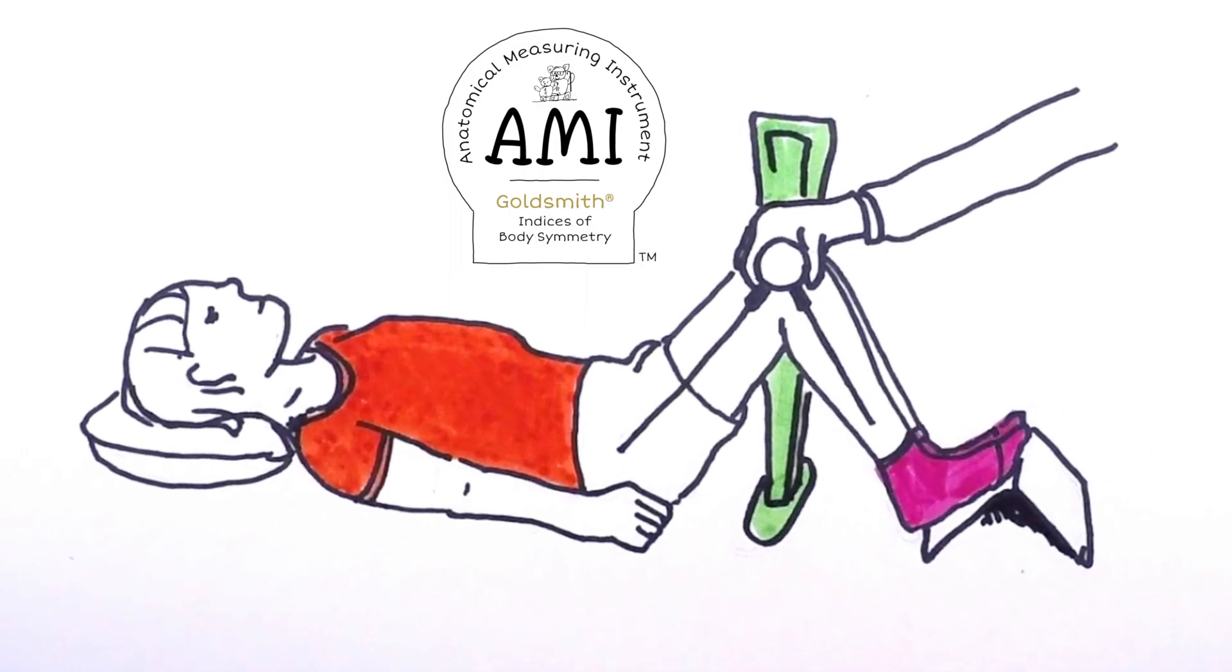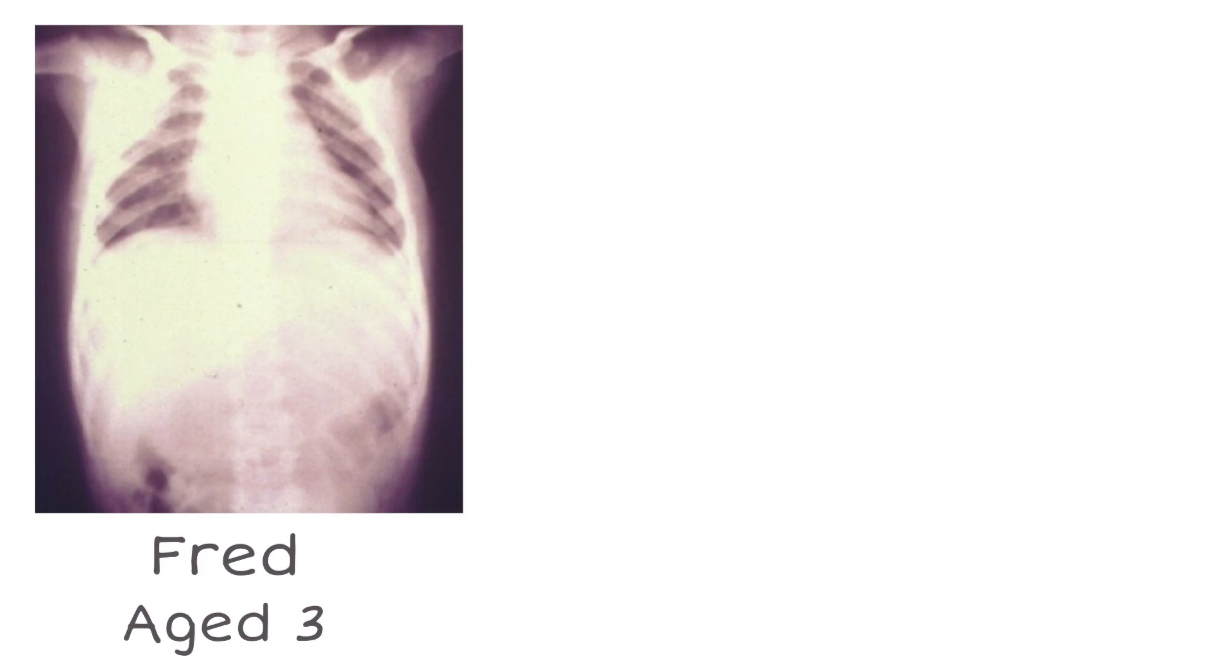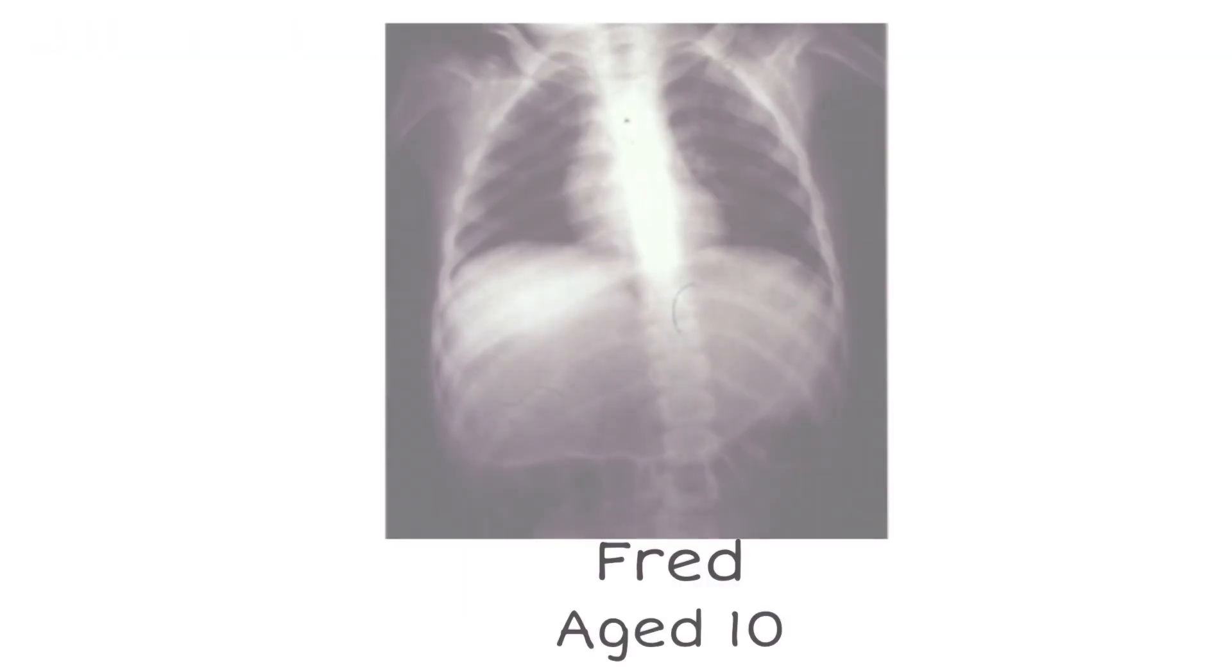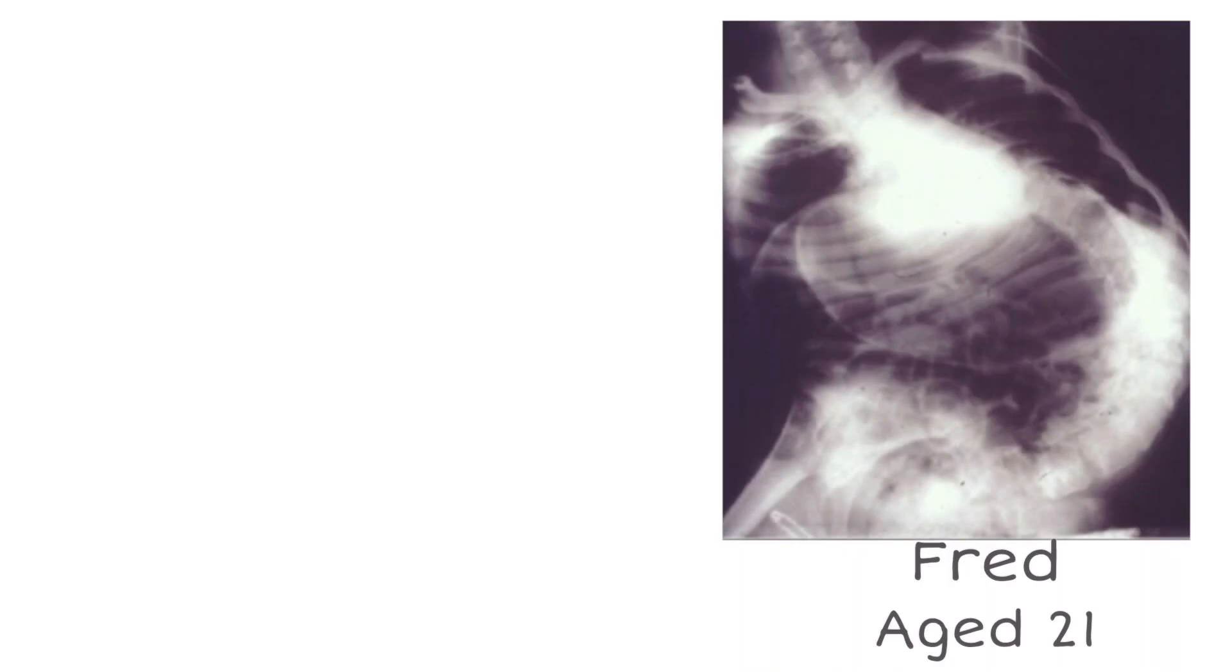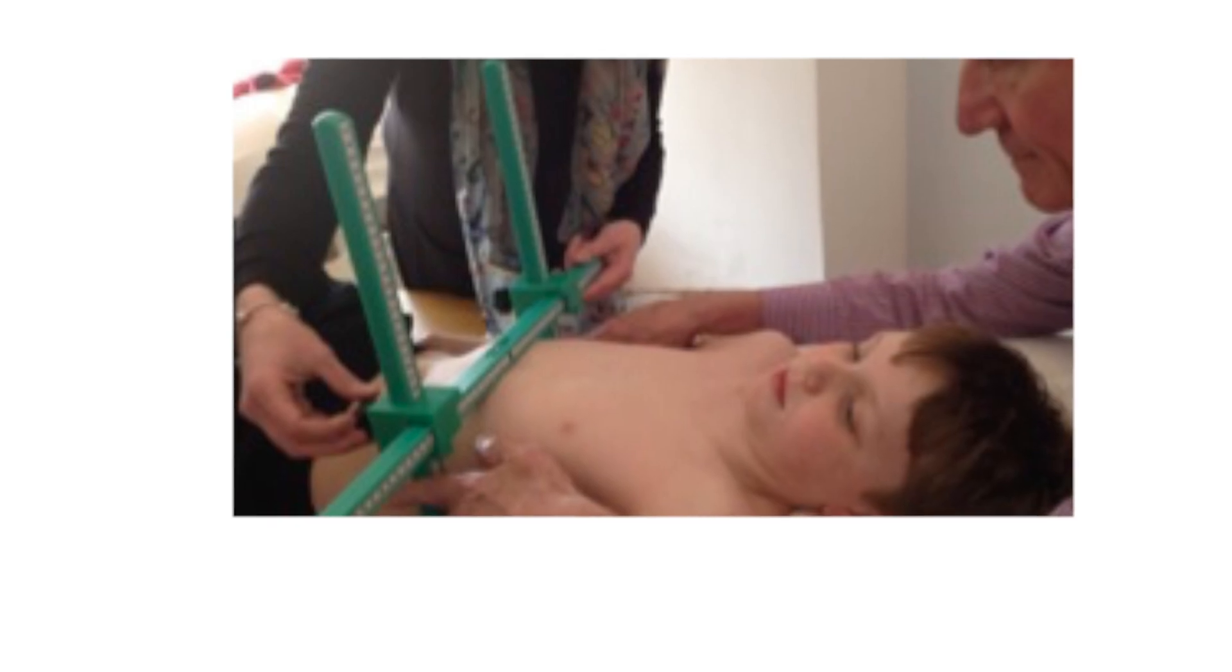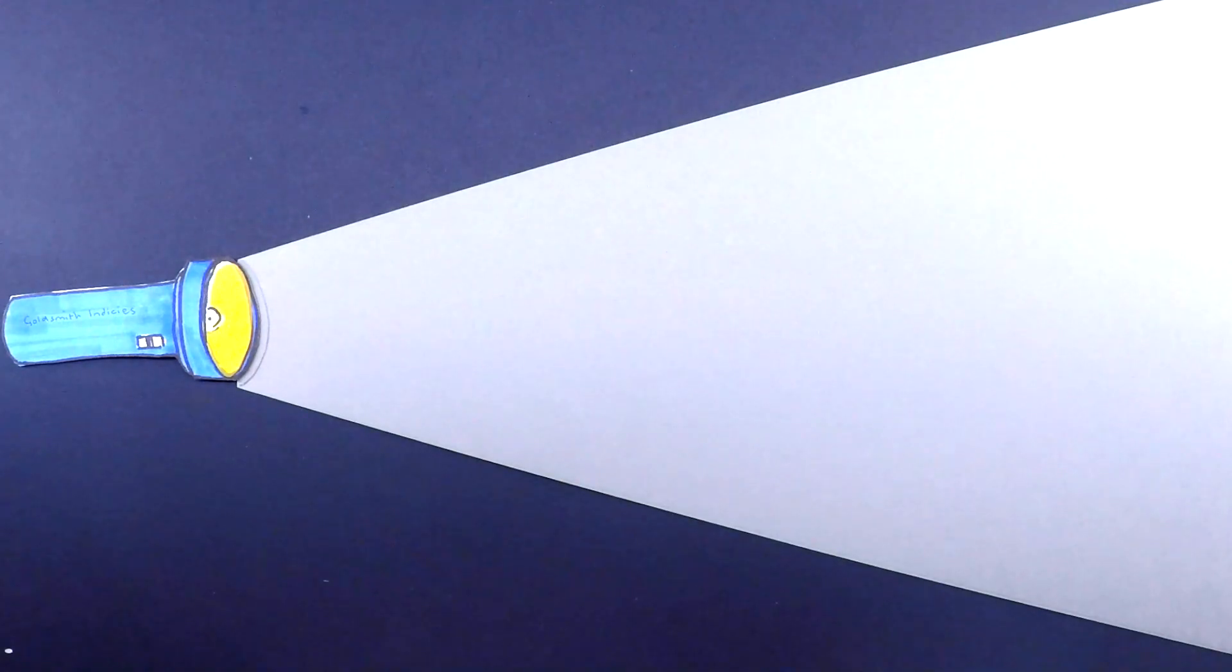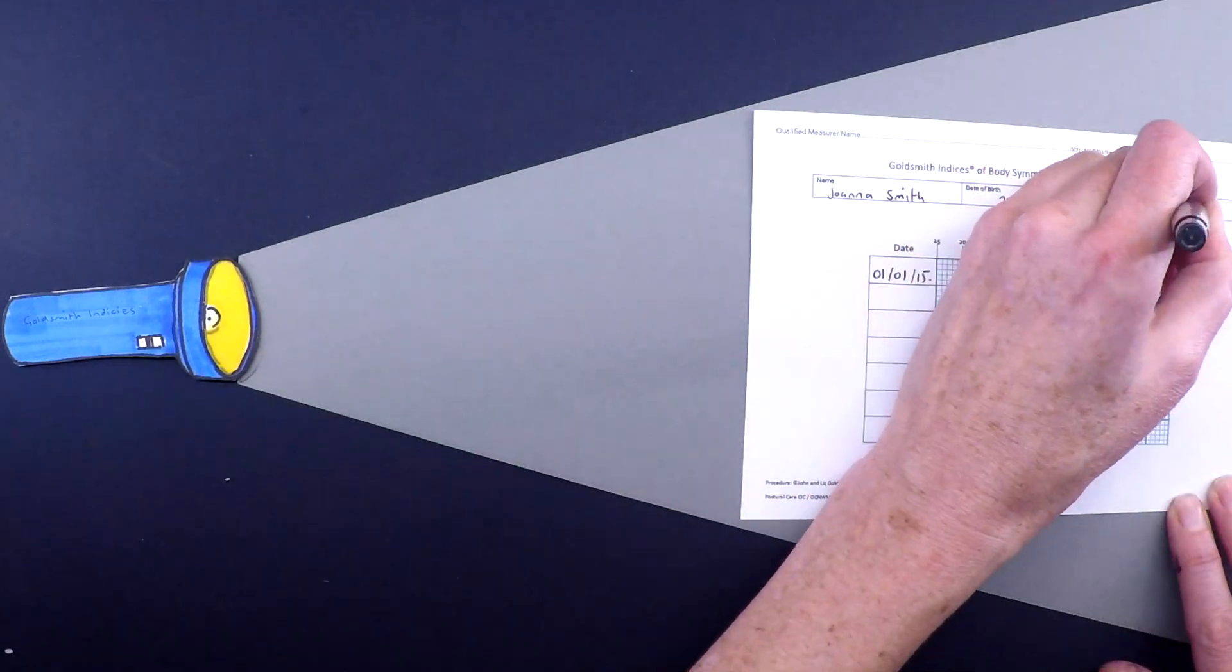Likewise, people with postural care needs shouldn't be cared for without measuring body shape. Left unchecked, distortions reduce a person's quality of life and can even be life-threatening. But with measurements, distortions can be identified early and the success of an intervention monitored using the Goldsmith Indices of Body Symmetry—like turning on the light and stepping out of the dark.